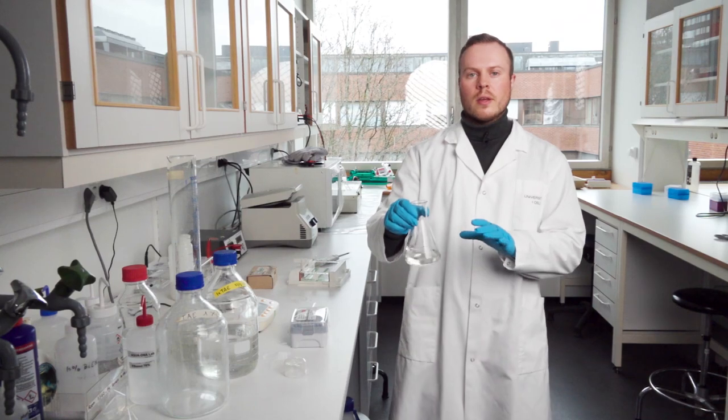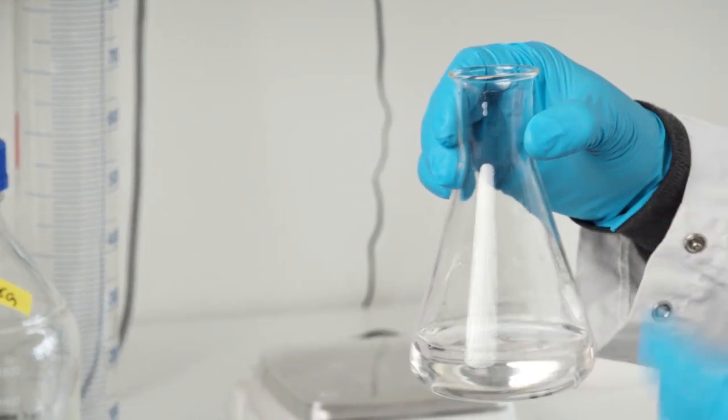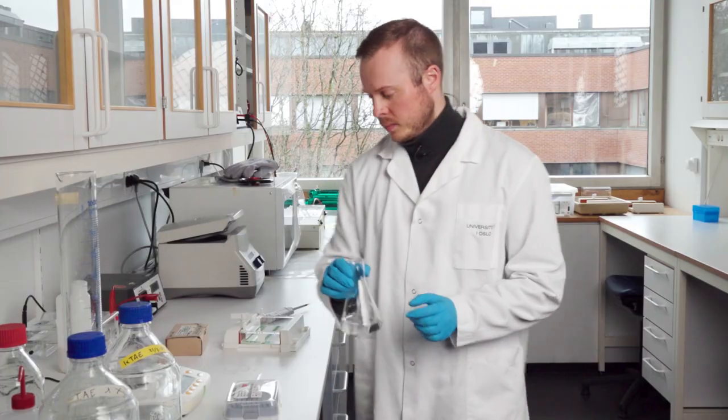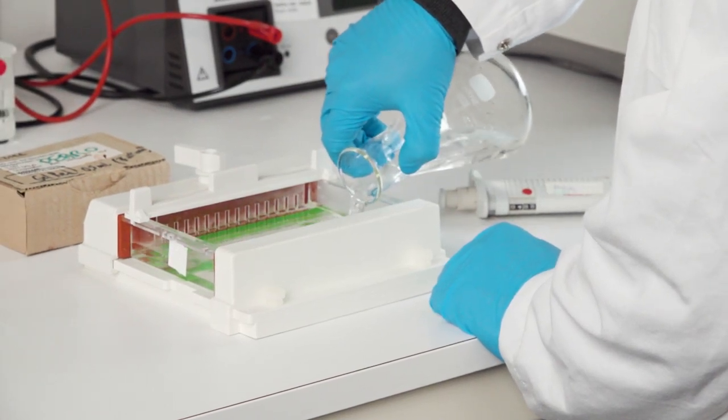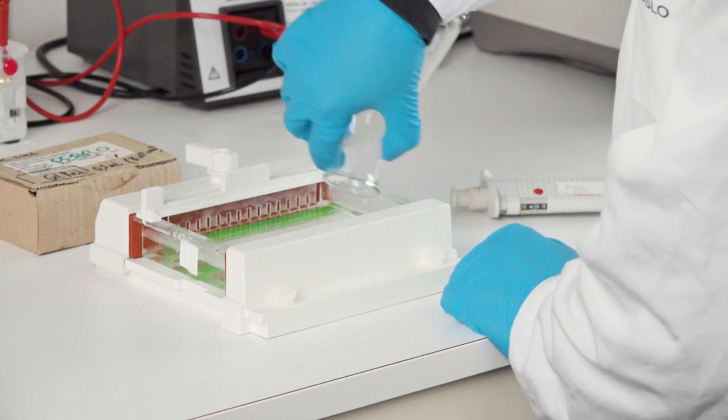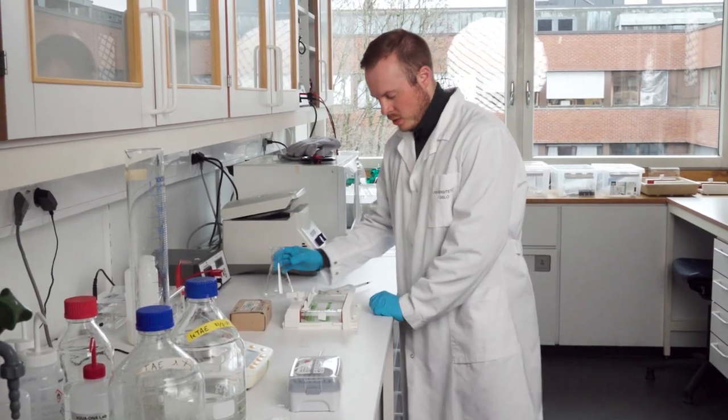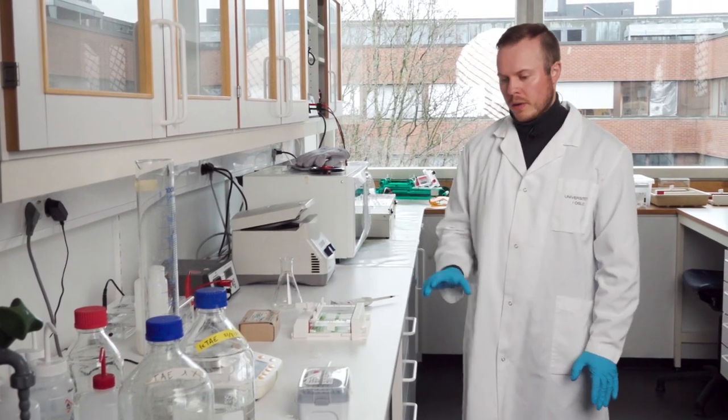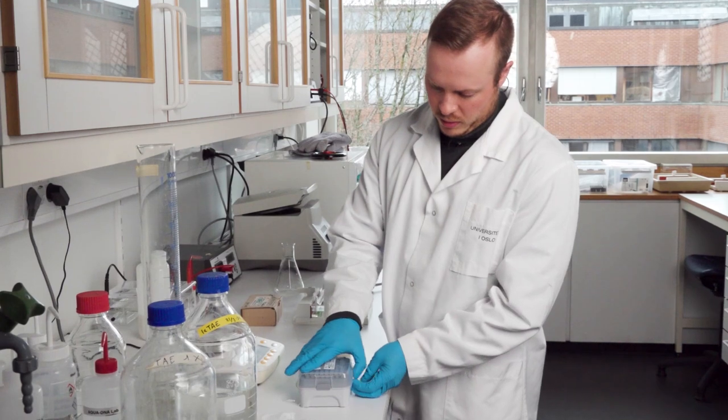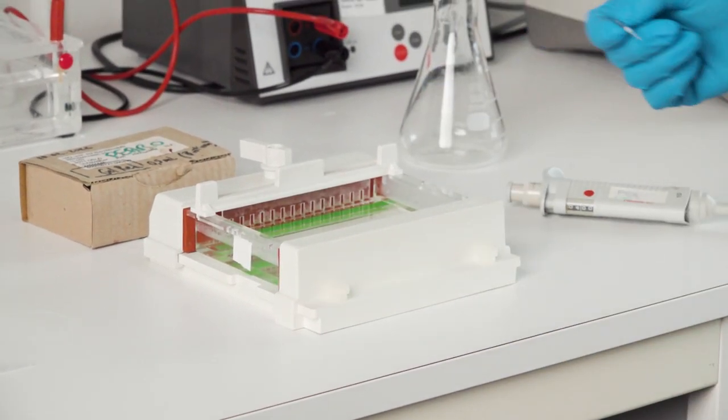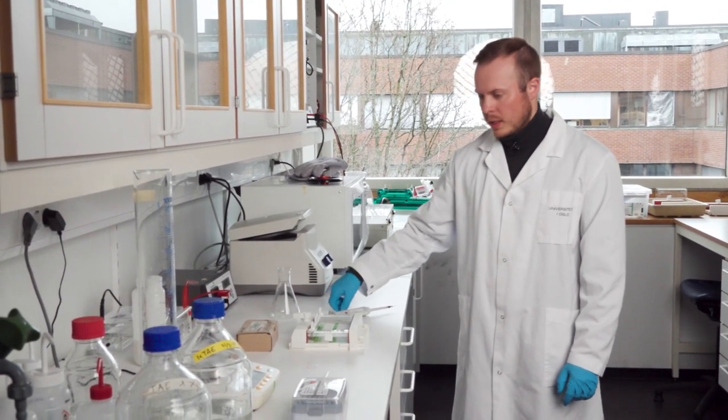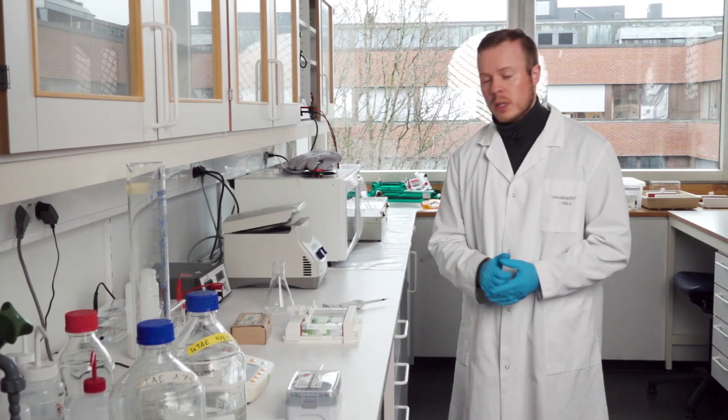We're ready for pouring the gel. Pour it quite slow and steadily. Sometimes you can get droplets inside here that can interfere. If you need to get those away, just take a pipette tip, move the droplets to one side, and take them up. Right now I didn't have any droplets, but that's how you do it. It needs to cool down for around 20 minutes to maybe half an hour before we can actually use the gel.